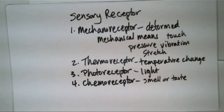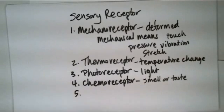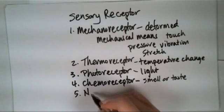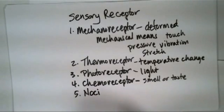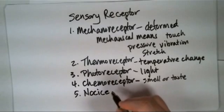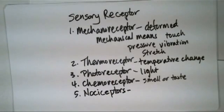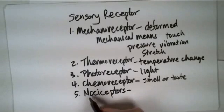These chemoreceptors are basically going to be smell or taste. This is also part of the chemical sense, part of the sensory system. And then the last one is nociceptors. I'm horrible at spelling or saying it, but let me put it out here for you so that you can see it.